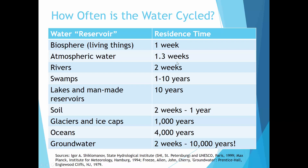Atmospheric water isn't much longer. Water that evaporates goes into the atmosphere and only stays there for about a week and a couple of days before it falls to Earth as some sort of precipitation.